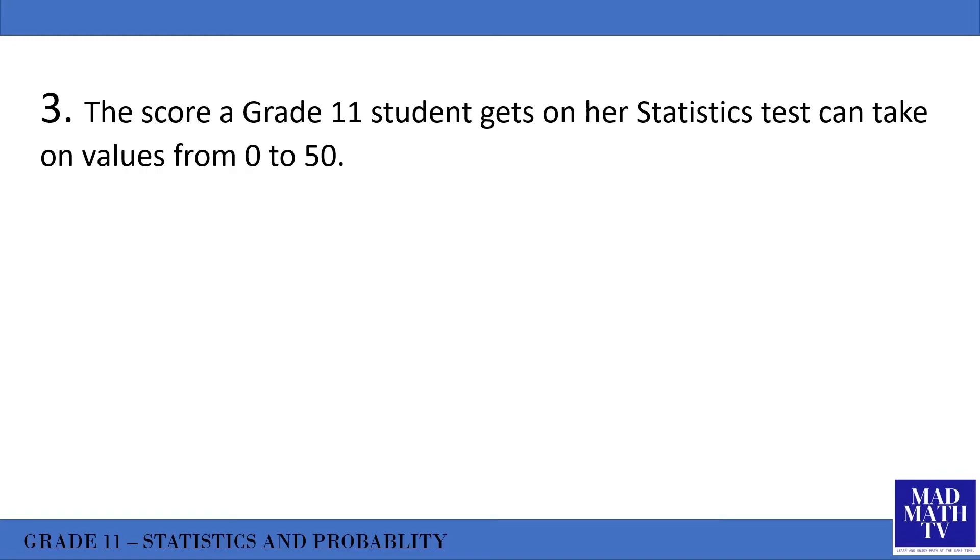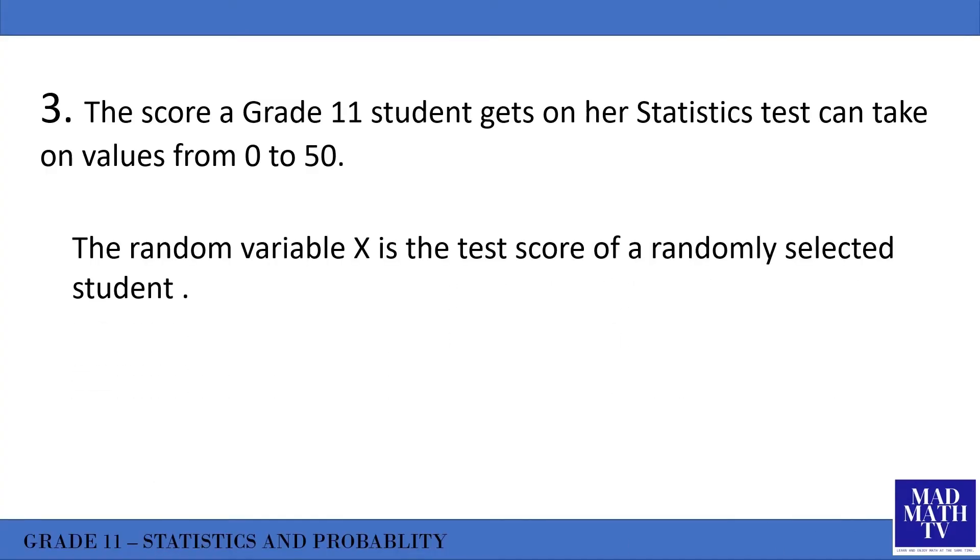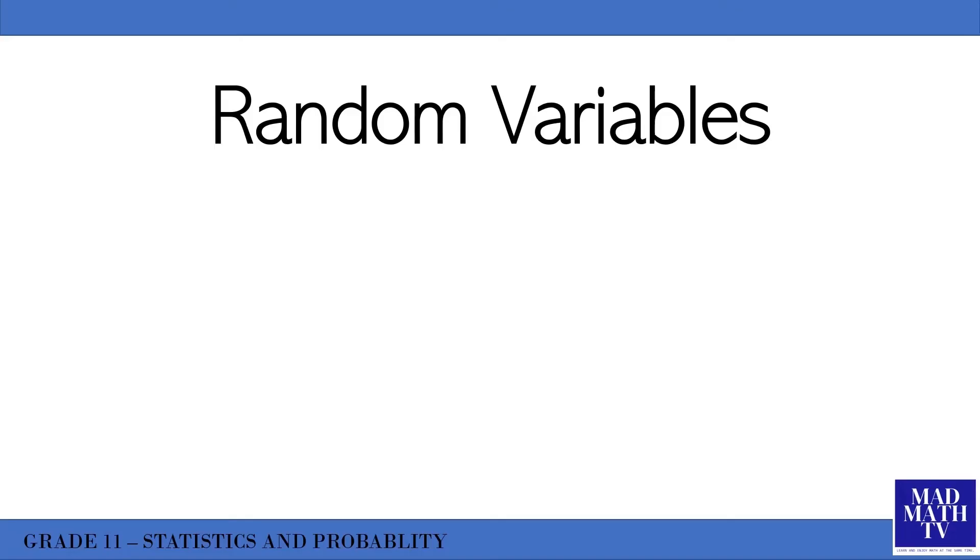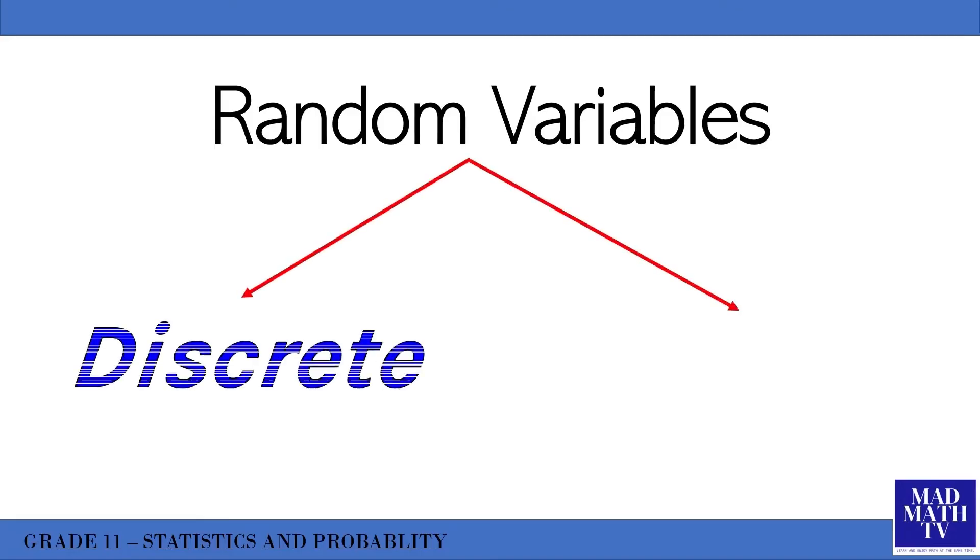The score a Grade 11 student gets on her statistics test can take on values from 0 to 50. If you randomly select a student and ask his score, what could be his possible response? His response could be 0, 7, 9, 29, 35, 42, or any number between 0 to 50. Here the random variable X is the test score of a randomly selected student, so the possible values of X are 0 to 50.